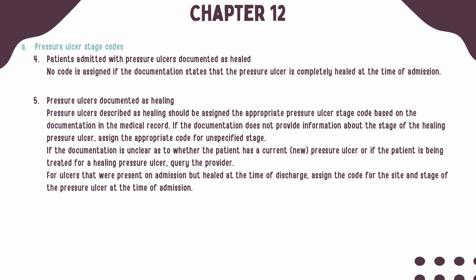When a patient is admitted with a pressure ulcer documented as healed, no code should be assigned. Pressure ulcers described as healing should be assigned the appropriate pressure ulcer code based on the documentation. If the documentation does not provide information regarding the stage of the healing pressure ulcer, the code for the unspecified stage should be assigned. If documentation is unclear as to whether the patient has a current or new pressure ulcer, or is being treated for a healing pressure ulcer, the provider should be queried.